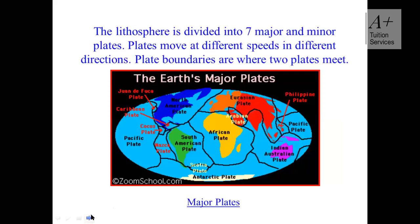The lithosphere is divided into seven major plates: the North American plate, South American plate, Caribbean plate, Nazca plate, Cocos plate, Pacific plate, Eurasian plate, Arabian plate, African plate, Indian-Australian plate, and the Philippine plate. The very important thing to note is where they are located.